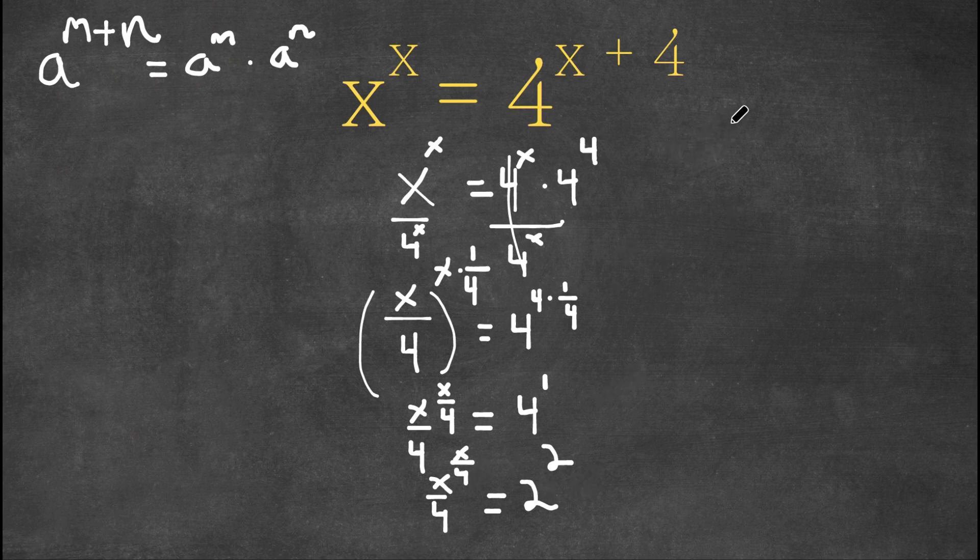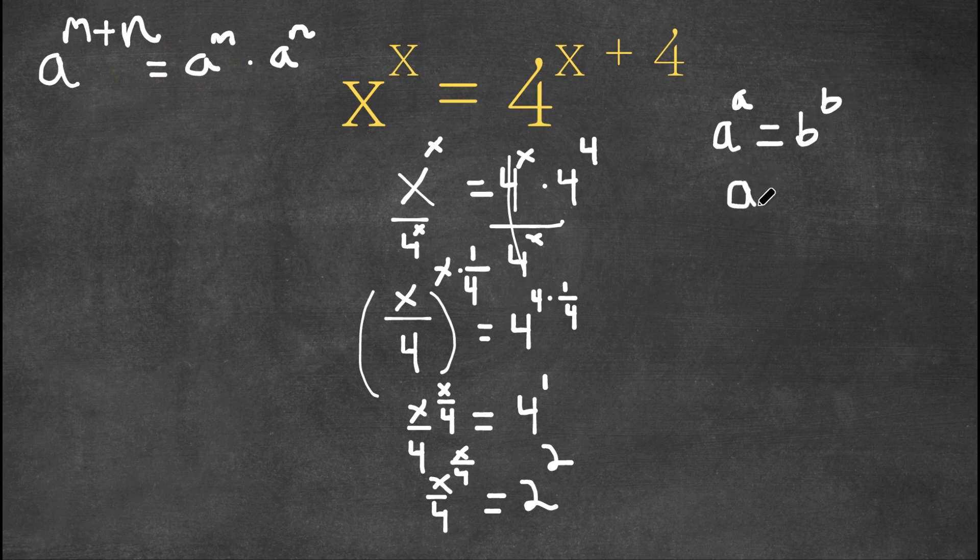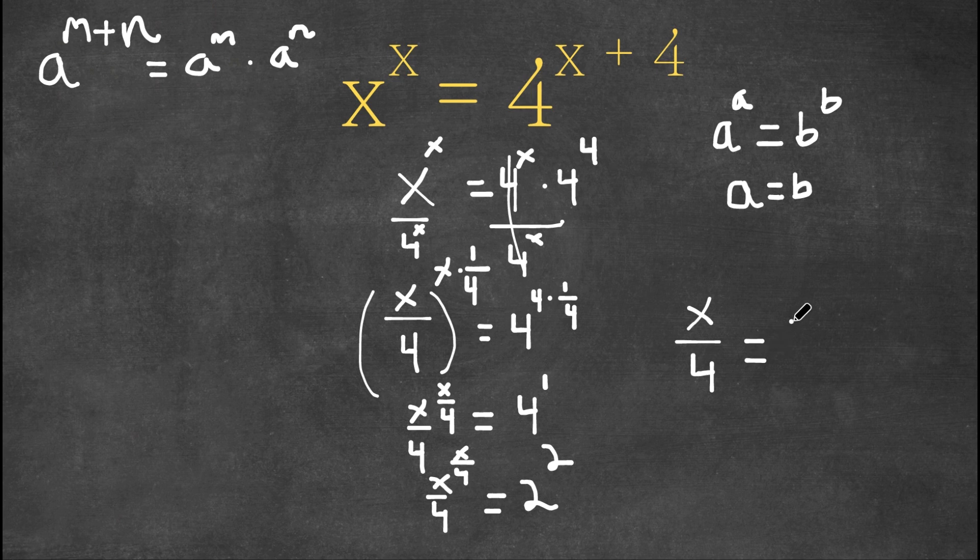Now if we have anything in the form a to the power of a equals b to the power of b, then we also know that a is equal to b. So right here we have x over 4 to the power of x over 4 equals 2 to the power of 2. Then this must mean that x over 4 equals 2.